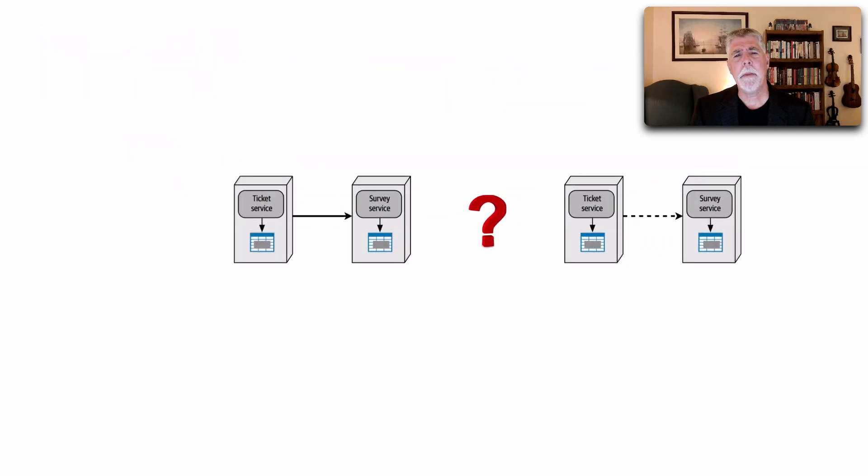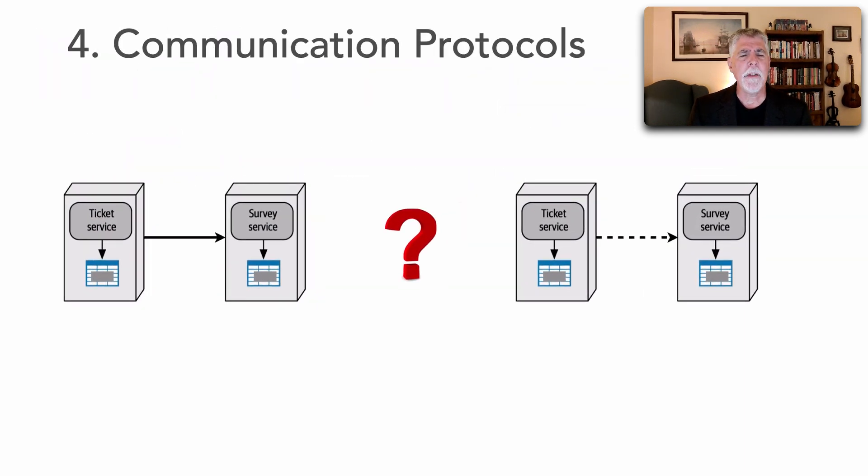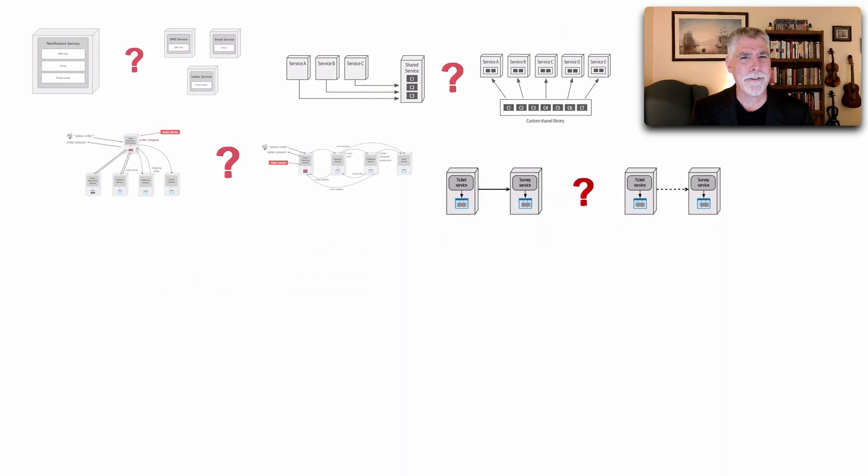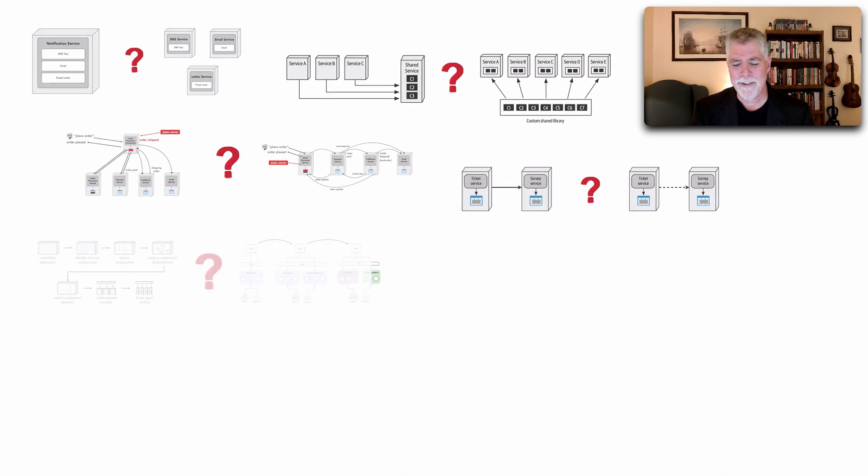Number four is that of communication protocols. The choice, for example, between synchronous calls, such as using REST, and asynchronous calls, such as using, for example, messaging. Which one should you use? Interestingly enough, this has a lot of trade-offs and implications in the choice of whether to do synchronous or asynchronous communication. But yet again, another choice we need to make within distributed architectures.